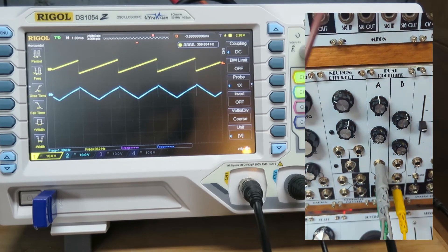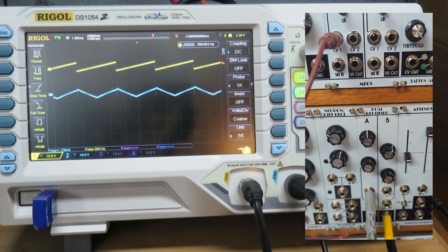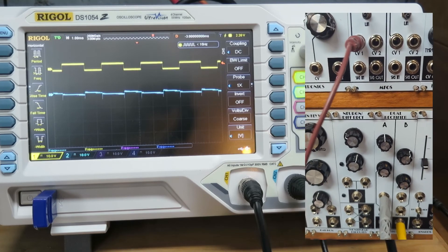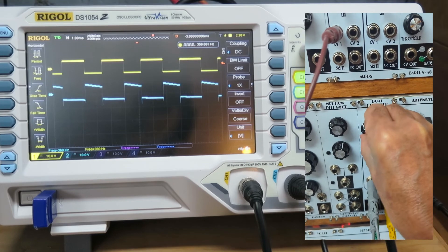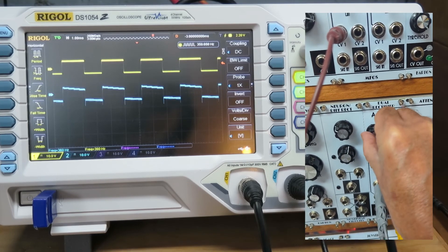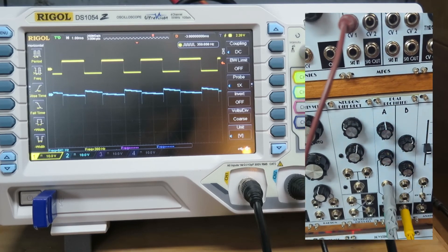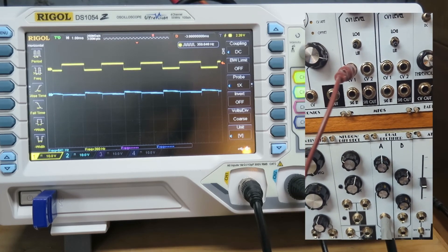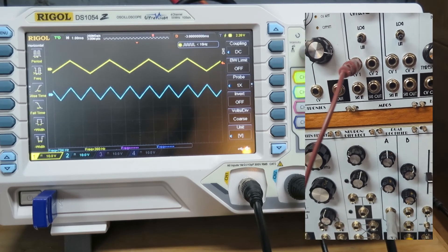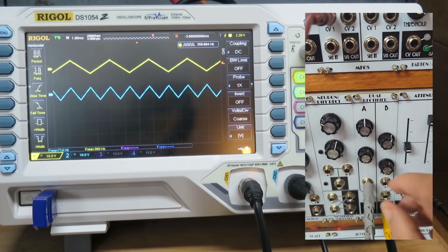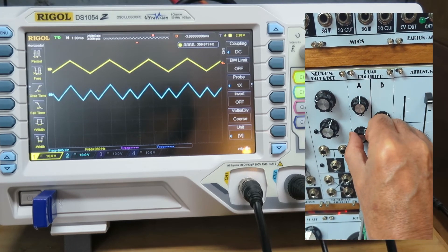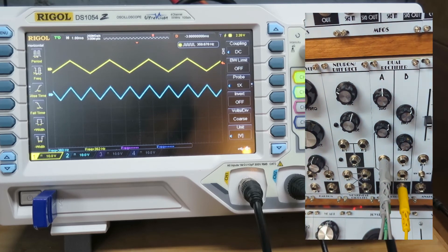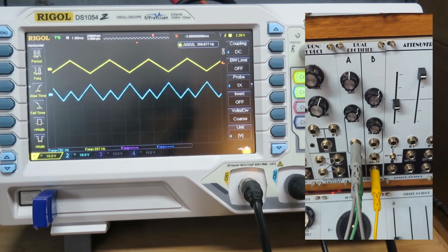Okay, and the only waveform you can't really use this with is a square or pulse wave, because if you rectify a square wave you just get a square wave with a smaller amplitude, so that's not so useful. Let's go back to the triangle and I can turn up the control voltage, automate that waveform morphing.